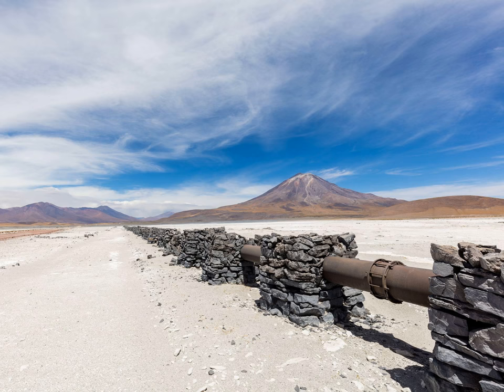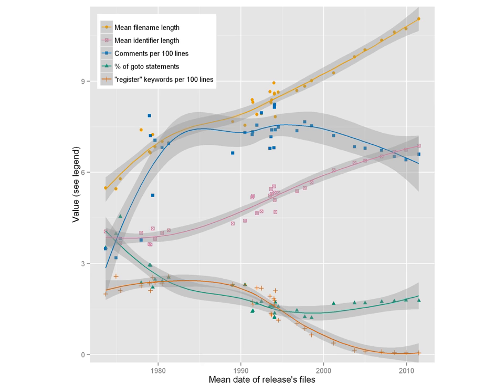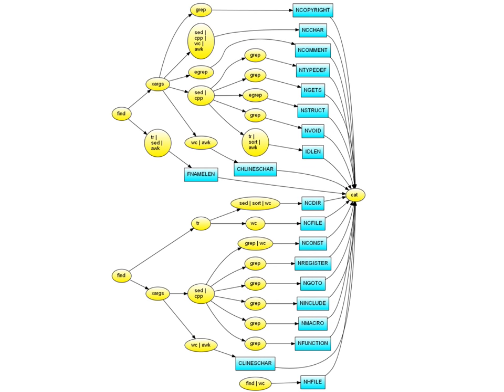The problem with pipelines is that they are linear. I started working on DAX when I wanted to study the evolution of C programming practices over long periods of time. To do this I had to repeatedly process the output of some commands with others and then gather together the results.